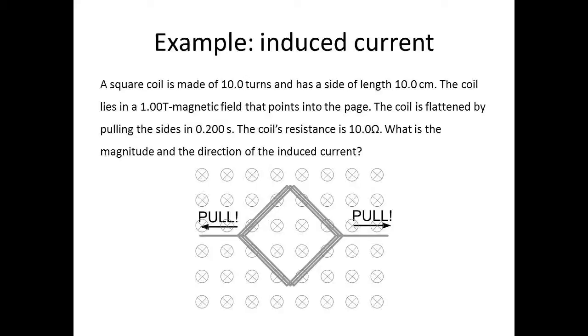Here's an example of induced EMF and induced current. A square coil is made of 10 turns and has a side of length 10 centimeters. The coil lies in a 1 tesla magnetic field that points into the page.